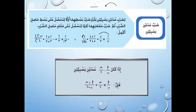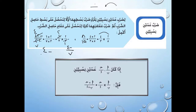لو اختصرنا من البداية: الثلاثة فيها الواحد، والثلاثة فيها الاثنين، يعني هيديني سالب 4/7. لو اختصرنا من النهاية: -12/21 تختصر كمان لـ -4/7، نفس الجواب. إذن لضرب عددين نسبيين: أ/ب × ج/د = (أ×ج)/(ب×د)، نضرب البسط في البسط على المقام في المقام.